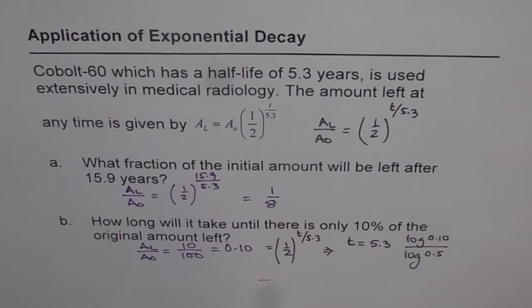Let us use a calculator to figure it out. So we have 5.3 × log(0.1) / log(0.5).